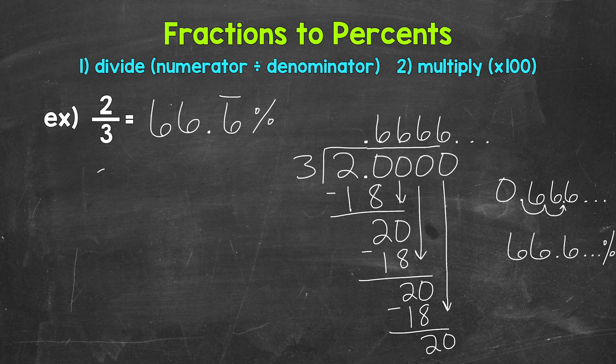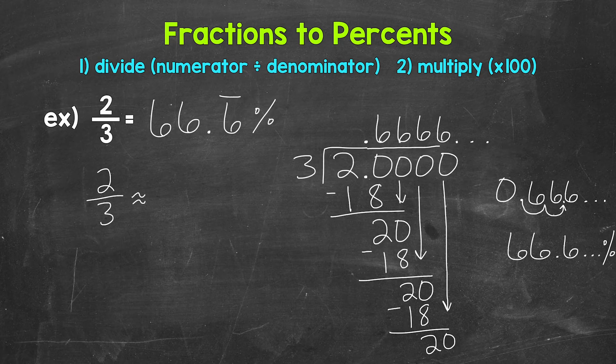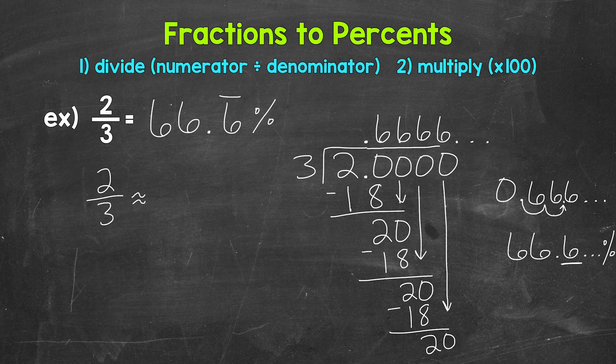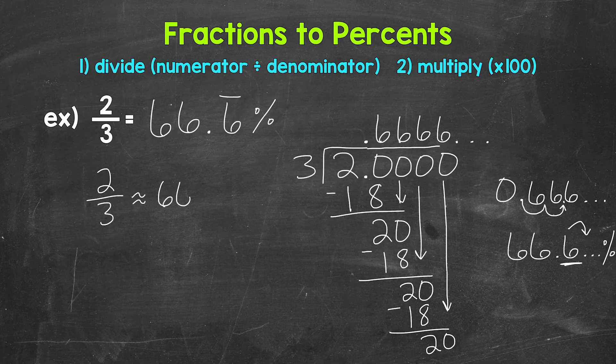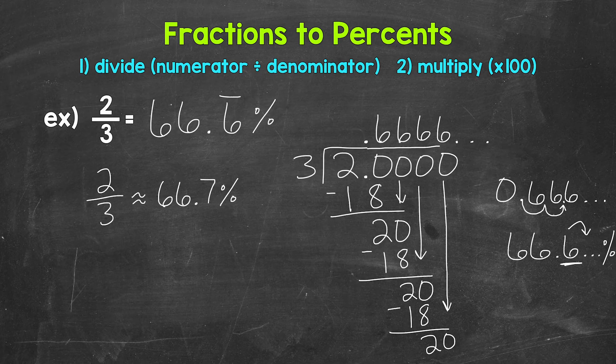So two thirds is approximately, and I'm using the approximately symbol here since we are rounding. This isn't exact. We have a six in the tenths place. And since the six is repeating, we have a six to the right in the hundredths. So this rounds up to 66.7 percent.